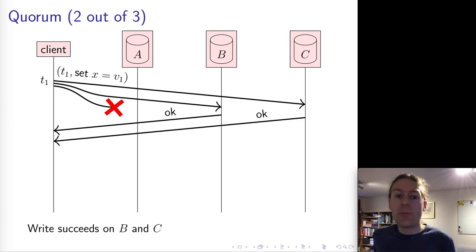And then B and C are going to respond to the client saying, OK, yes, I got your request to update this particular key X. And once the client has collected two positive responses, then it's happy. So the fact that the request didn't get through to A is OK. So maybe A is unavailable. As long as B and C still respond, that's still fine.